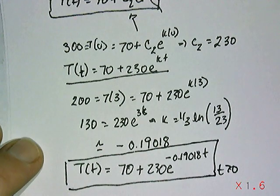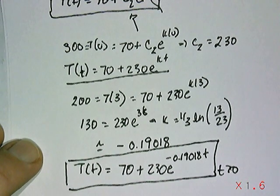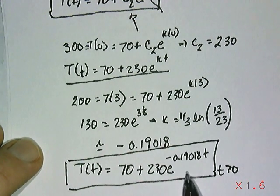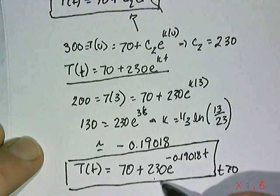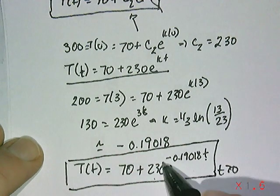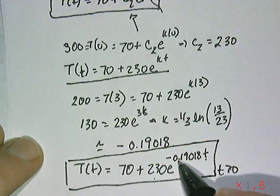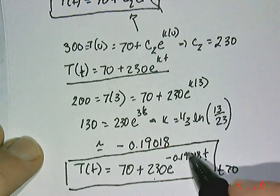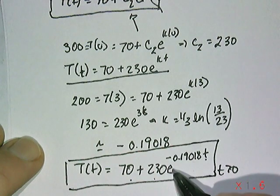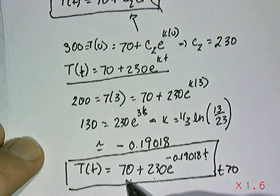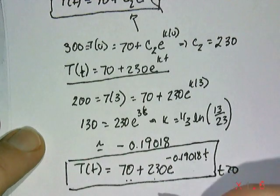And to answer the question, well, how long does it take to reach room temperature, is basically saying when is this term right here—because notice what's going to happen, as time goes to infinity, this is negative, 0.19 times t. Eventually, this whole term will go to zero, and you'll hit 70. So how small does this have to be is what you're concerned about, relative to 70, to say you're practically at room temperature.